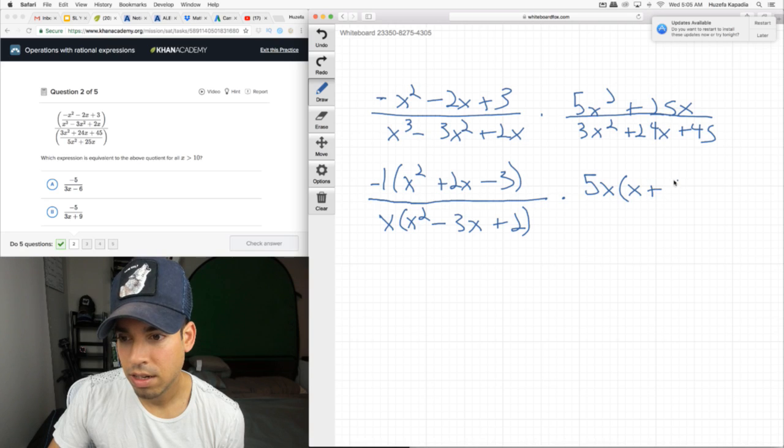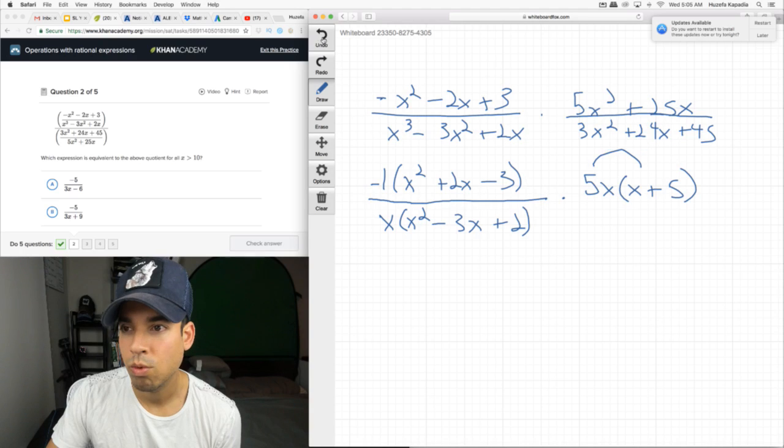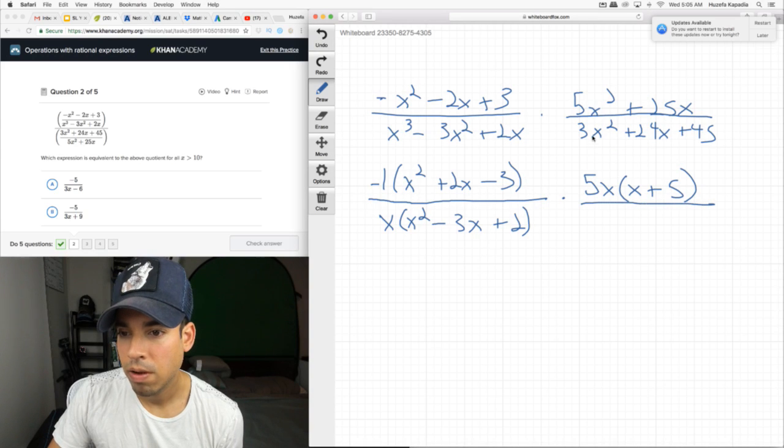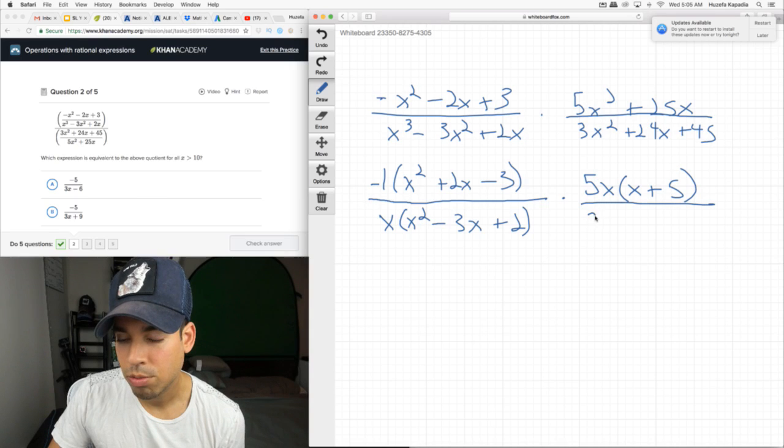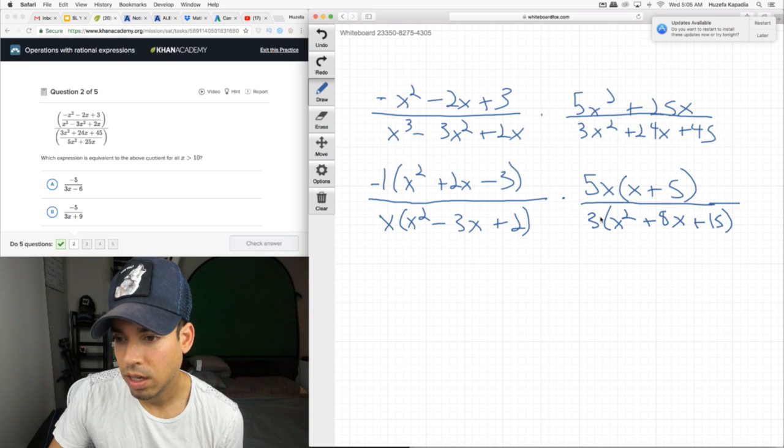On this side, clearly, that 5X is going to come out here. So, we got an X remaining inside plus 5. You can check that's right because that becomes 5X squared and 25X and that works over. Now, this, first we can factor a 3 out of the whole thing. So, it becomes 3 times X squared plus 8X plus 15. Okay. Now, we're ready to factor.